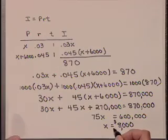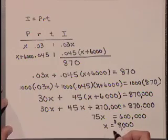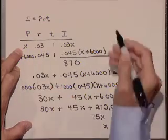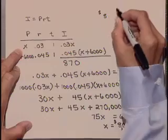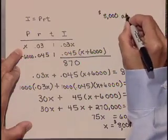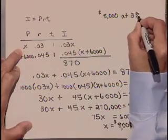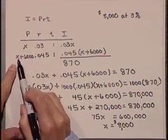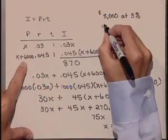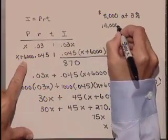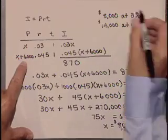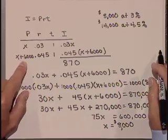Now let's make sure that we've answered the question that's asked. And the question is, how much did he invest at each rate? We've solved for X. X represented our amount invested at 3%, and so $8,000 is invested at 3%. And our second amount is X + 6,000, or 8,000 + 6,000 is $14,000 at 4.5%. We've solved it.